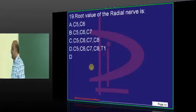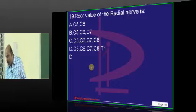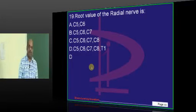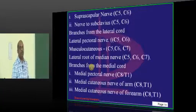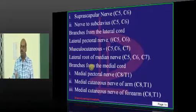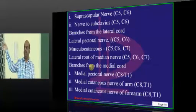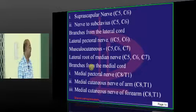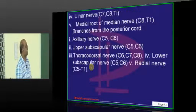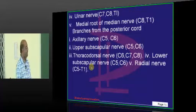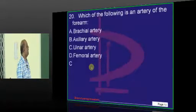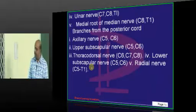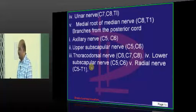What is the root value of the radial nerve? A straightforward question. C5 to T1 is the classical root value of the radial nerve, as all of you know. Crutch palsy is the typical palsy which occurs because of C5 to T1, a very widespread root value. Ulnar nerve is C7, C8, T1; axillary nerve is C5, C6; thoracodorsal is C6, C7, C8. But the only one which has got a very extensive root value would be the radial nerve.